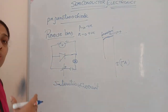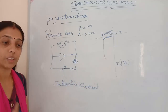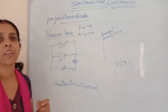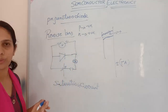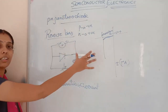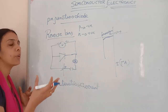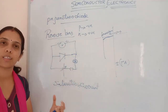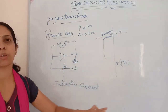After the breakdown voltage, if we continue increasing the applied voltage, the current increases rapidly and may damage the PN junction diode. Every PN junction diode has a particular voltage rating. Once the breakdown voltage is reached, we must stop increasing the applied voltage to avoid permanent damage to the diode.